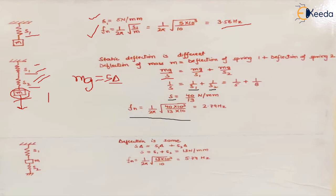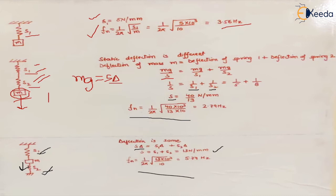In the third case, the mass is fixed between two springs. Whatever deflection takes place will be the same for both springs — if mass M moves in one direction, the same deflection occurs in both S1 and S2. So S × δ equals S1 × δ plus S2 × δ, meaning S_eq equals S1 plus S2, which is 13 N/mm. You place this value in the natural frequency formula to get the answer.